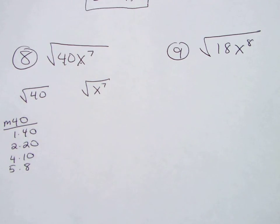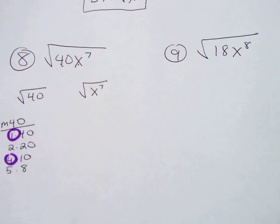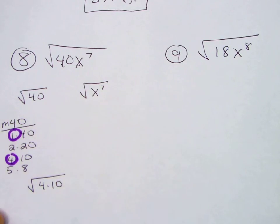What's the perfect square? 1 and 4. So I'm going to write 40 as 4 times 10. Radical 4, radical 10. 2, radical 10. Alright.